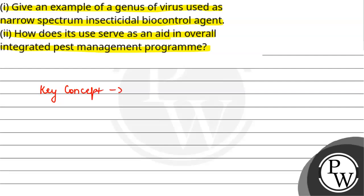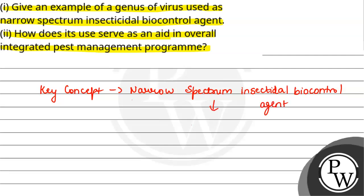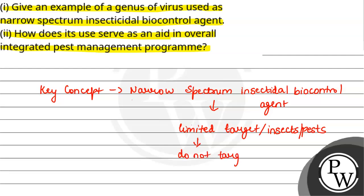The key concept here is narrow spectrum insecticidal biocontrol agent. When we talk about this, the target is quite limited to particular insects or particular pests. This is why we call them narrow spectrum — because the target is limited. These are non-target species which are not targeted, and therefore no harm is done to them.